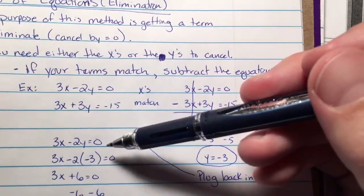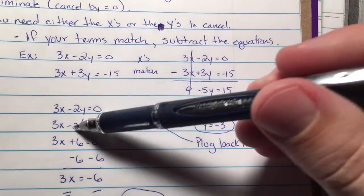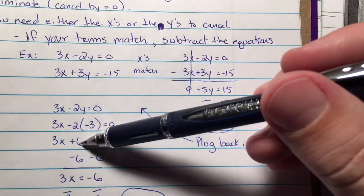I replace my y with the negative 3. Negative 2 times negative 3 is 6. Positive 6.